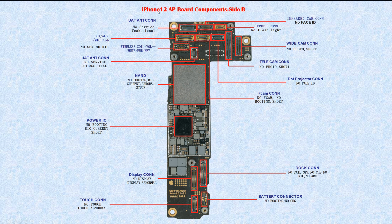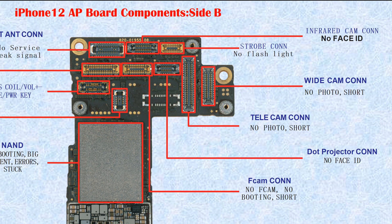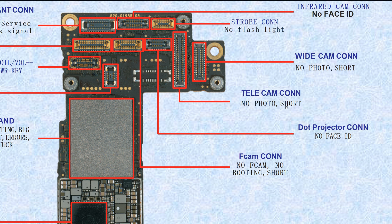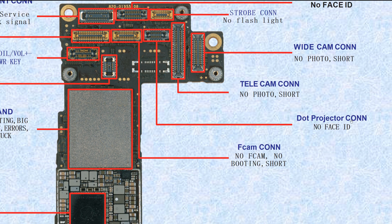iPhone 12 AP board components, Side B. There are many connectors here. This one is the infrared camera connector — if broken, it causes no Face ID. This one is the strobe connector — if broken, it causes no flashlight. This one is the wide camera connector — if broken, it causes no photo.